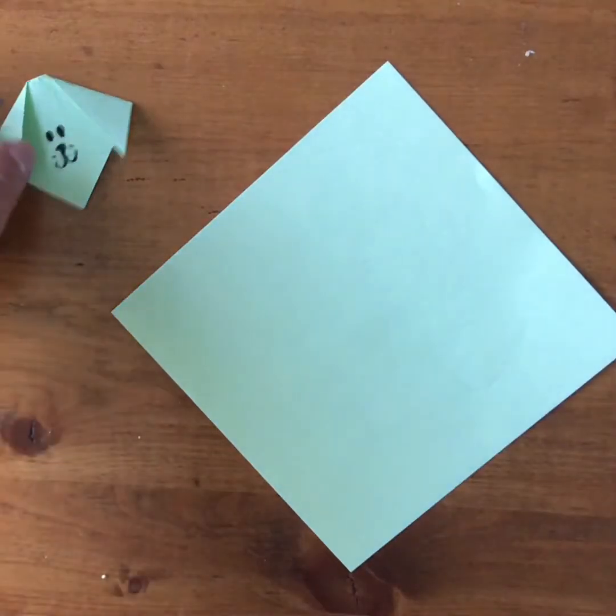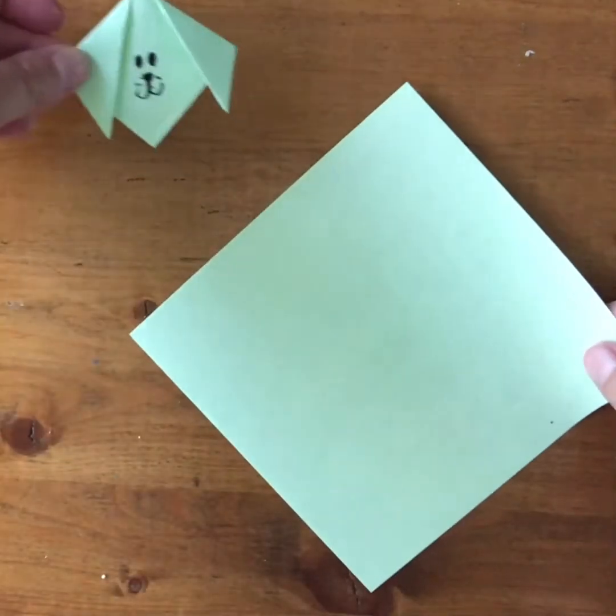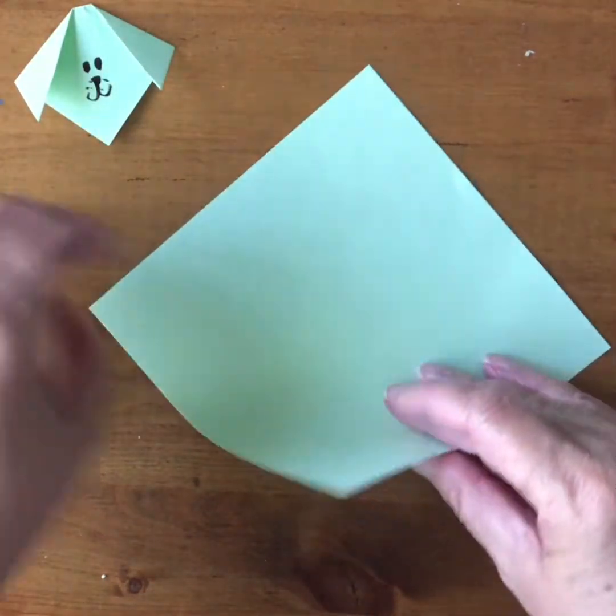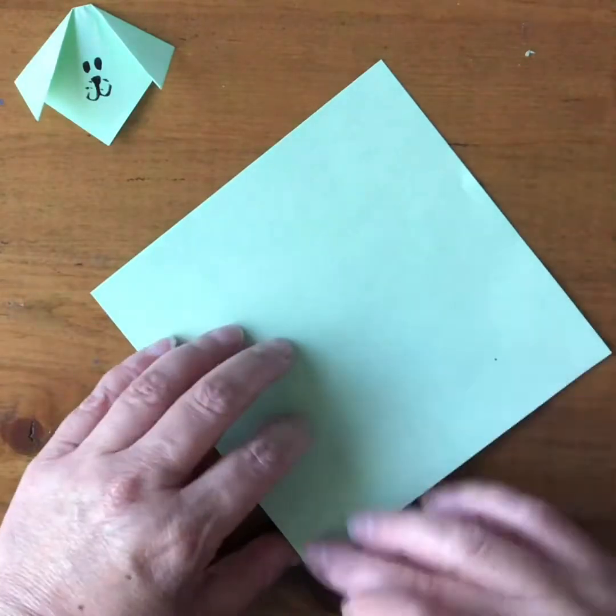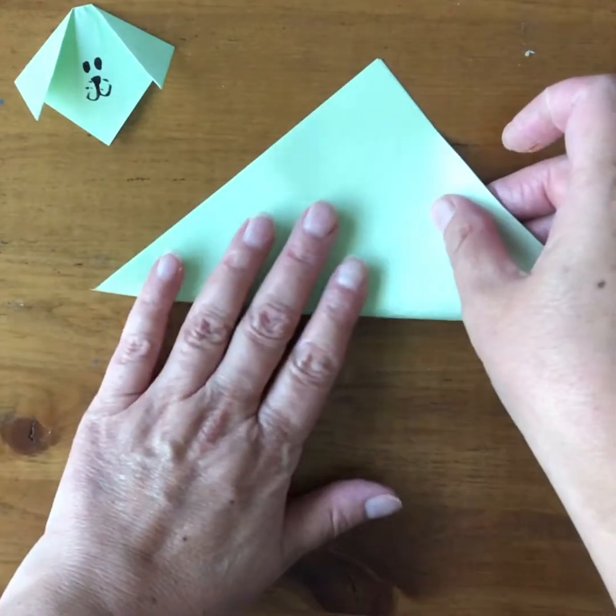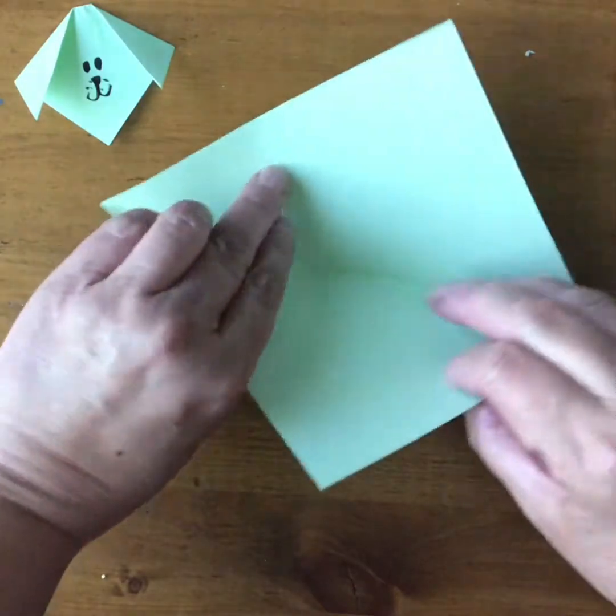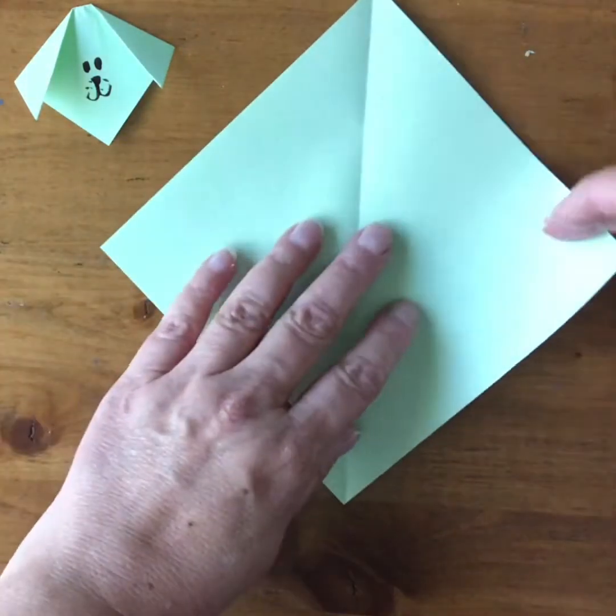You want to make the puppy with the body. There's a little head that I've made already. And then you take the larger square and again, you fold it from bottom point up to top point. Then you open it up and now you're going to make a kite fold.